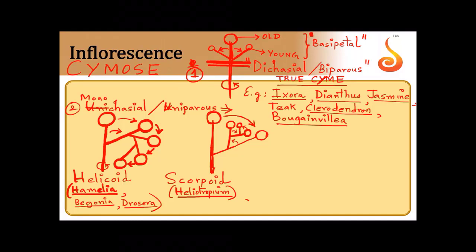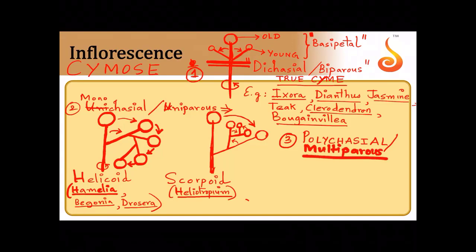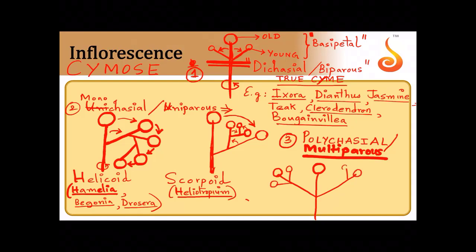The last type of cymose inflorescence is the polychasial or multiparous cyme. In this type, the floral axis ends in a cyme and each branch again ends in a cymose arrangement with multiple branches. Each branch ends in a dichasial cyme, so this is called a polychasial or multiparous cyme due to multiple branching at each node.